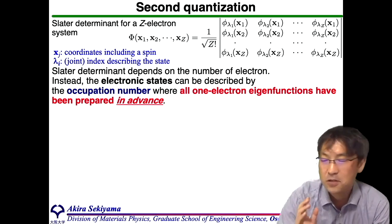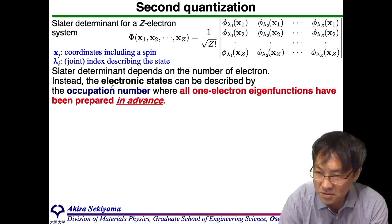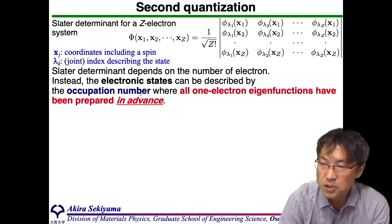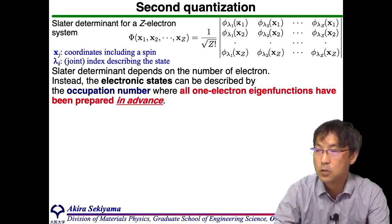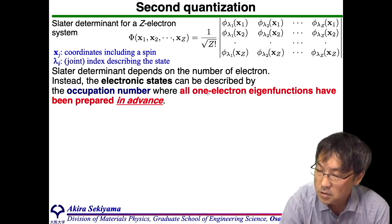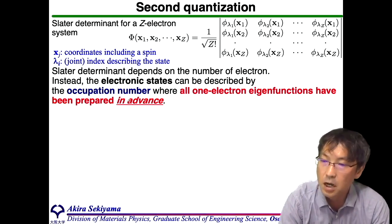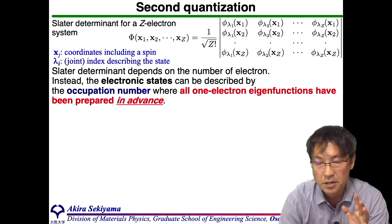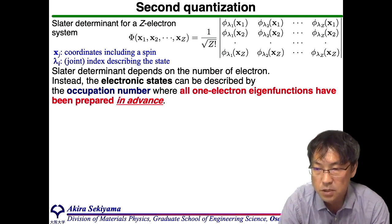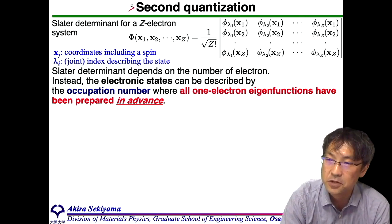One of the convenient ways to describe the many-electron system is to use the occupation number. This is an eigenstate because these states are mutually orthonormal. So, all one-electron wave functions have been prepared in advance, and then we set the electronic state by using the occupation number. This is the idea of the second quantization.